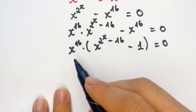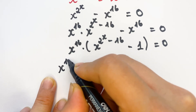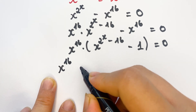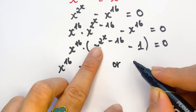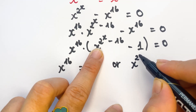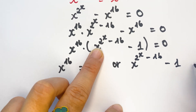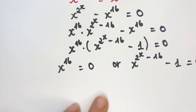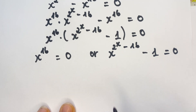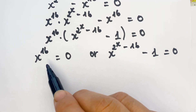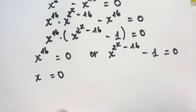Everyone can see that we have two equations. Firstly, x^16 equals 0, or x^(2^x - 16) minus 1 equals 0. From the first equation, everyone can see x equals 0.